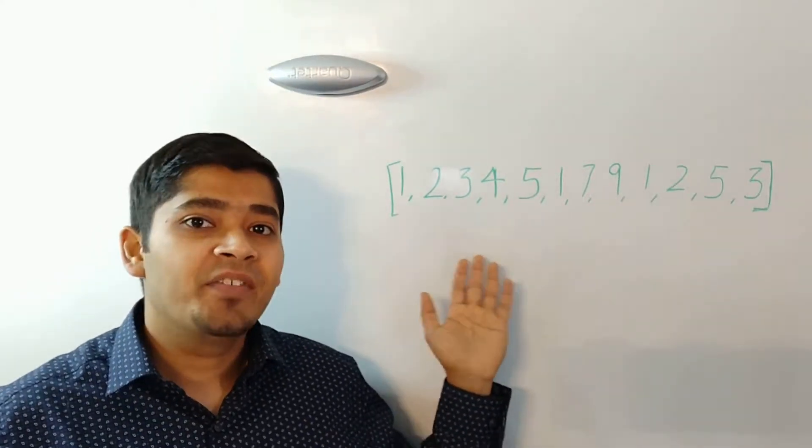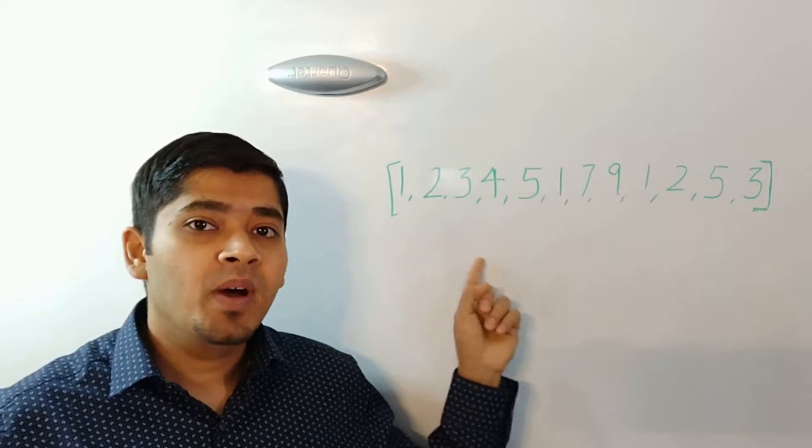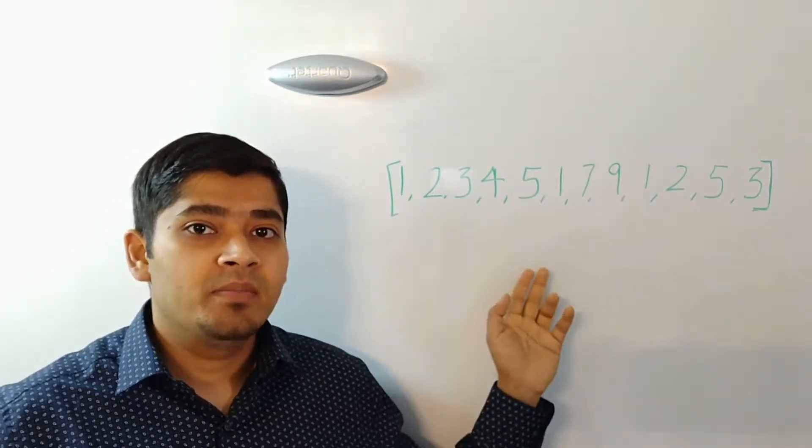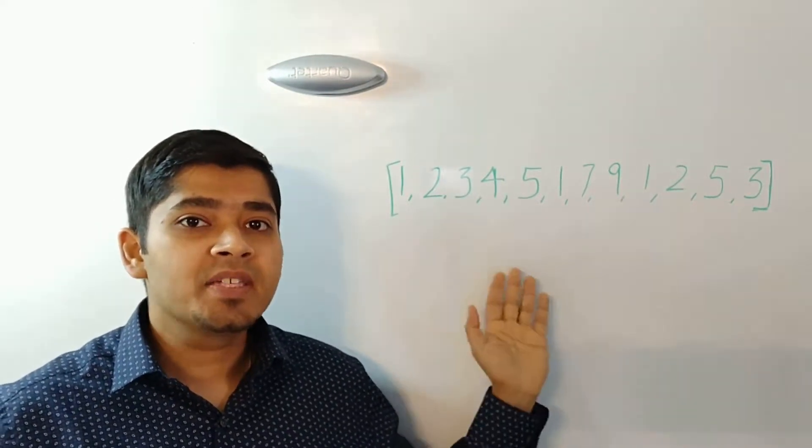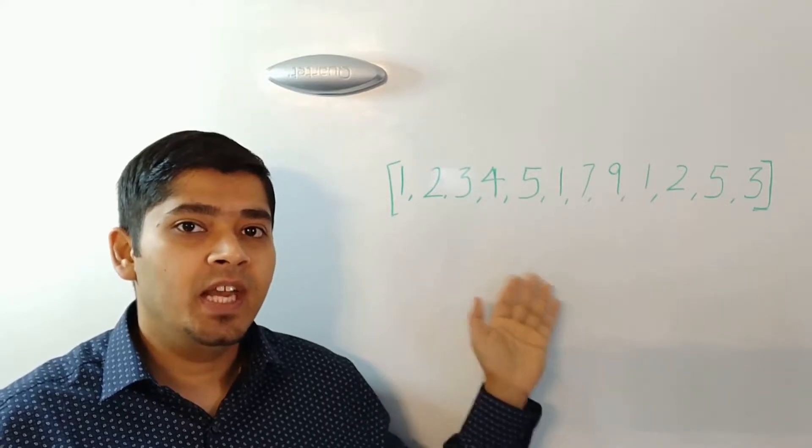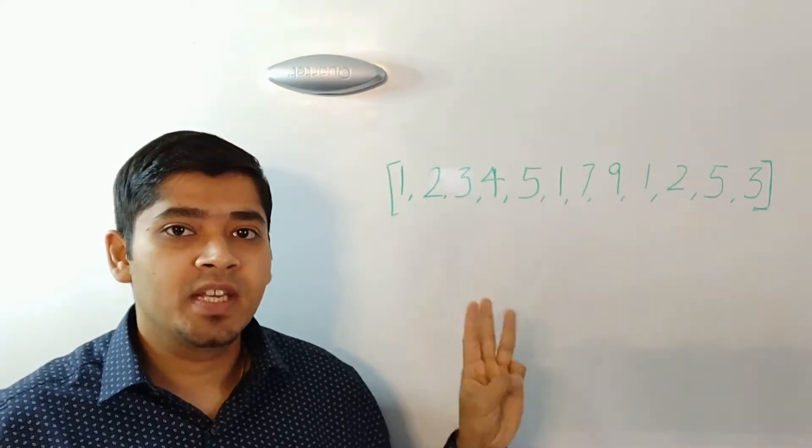As you can see in our sample array, the number 1 is appearing three times. So that's the highest frequency for any given element. So the degree of this array is 3.